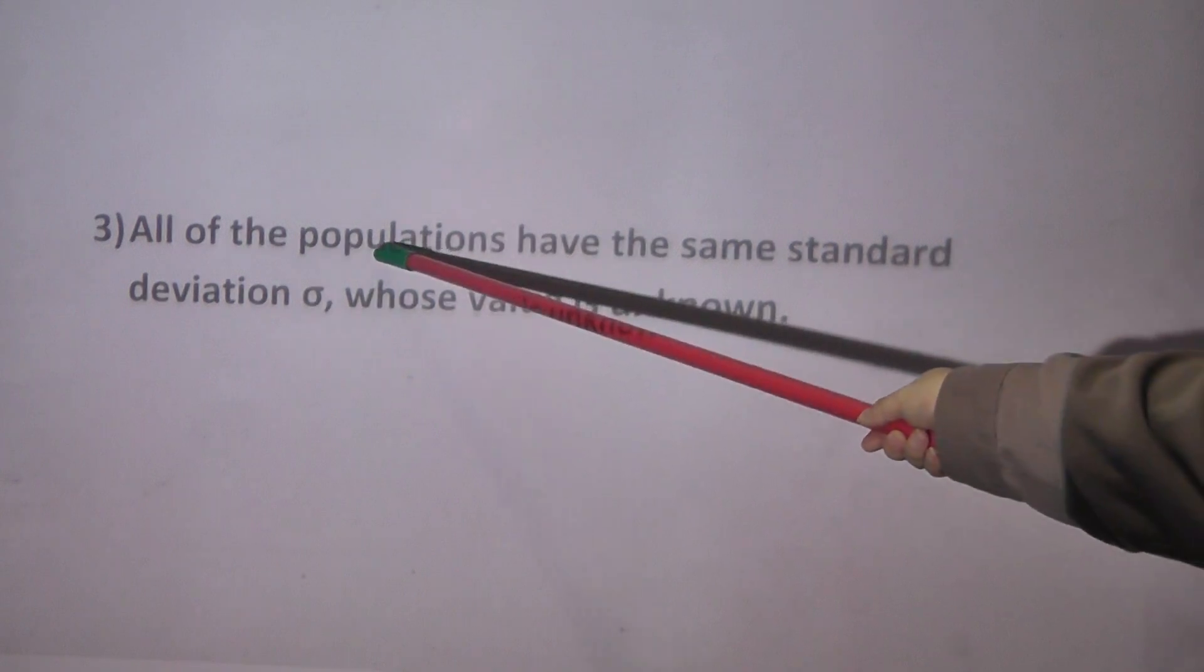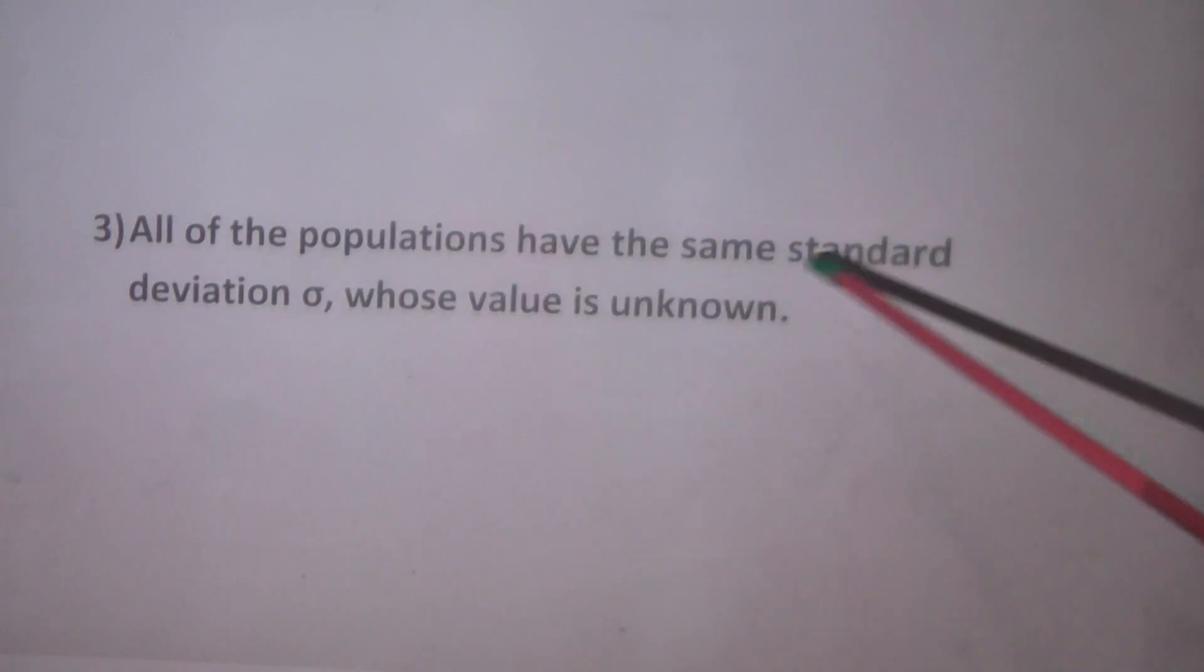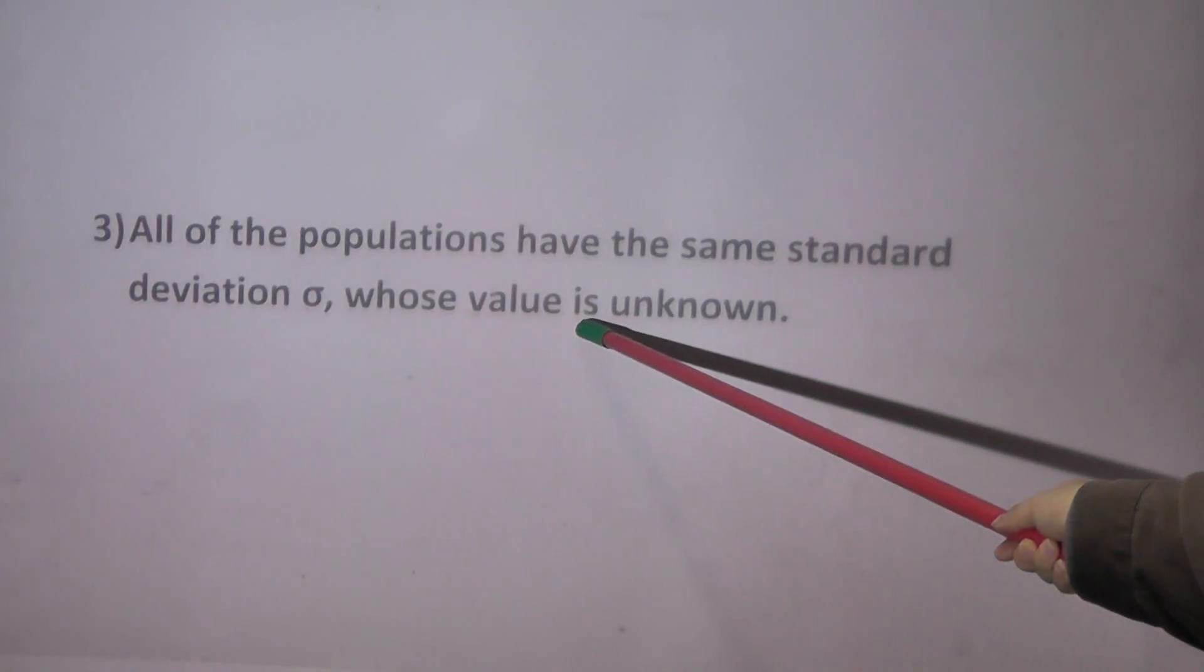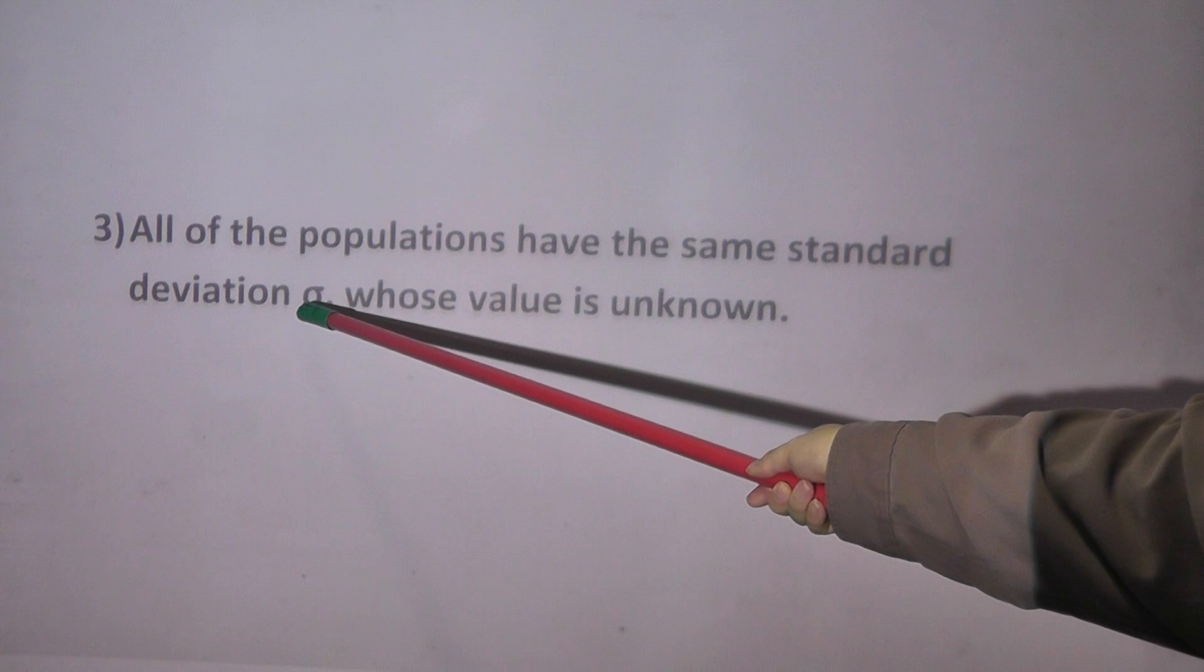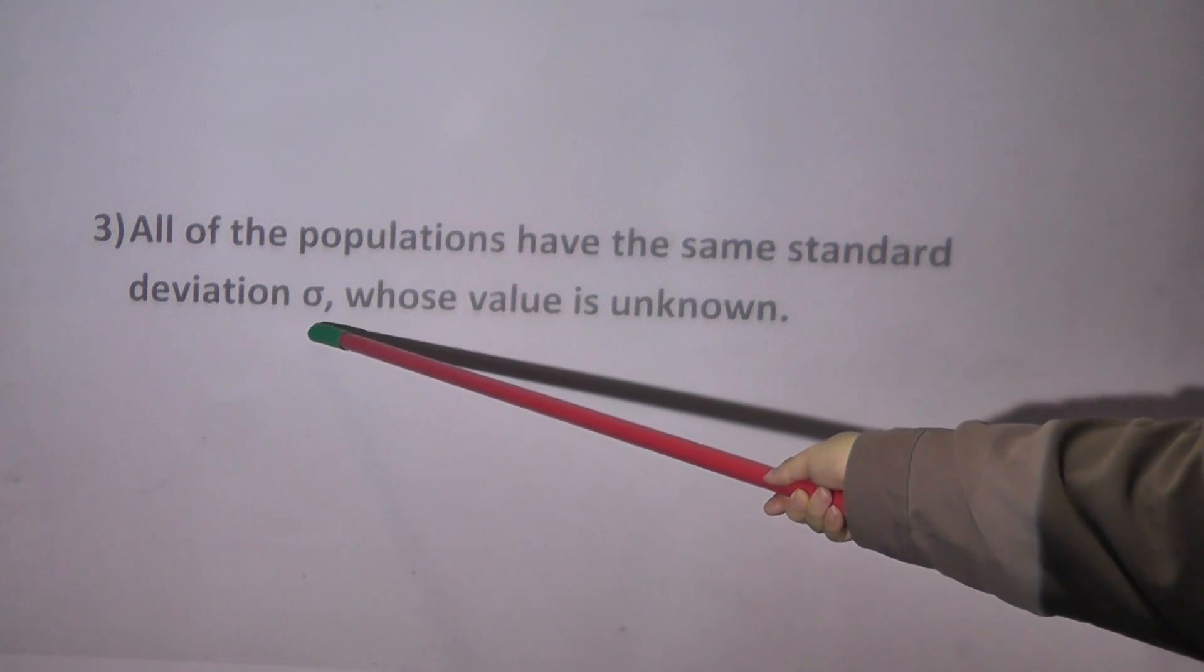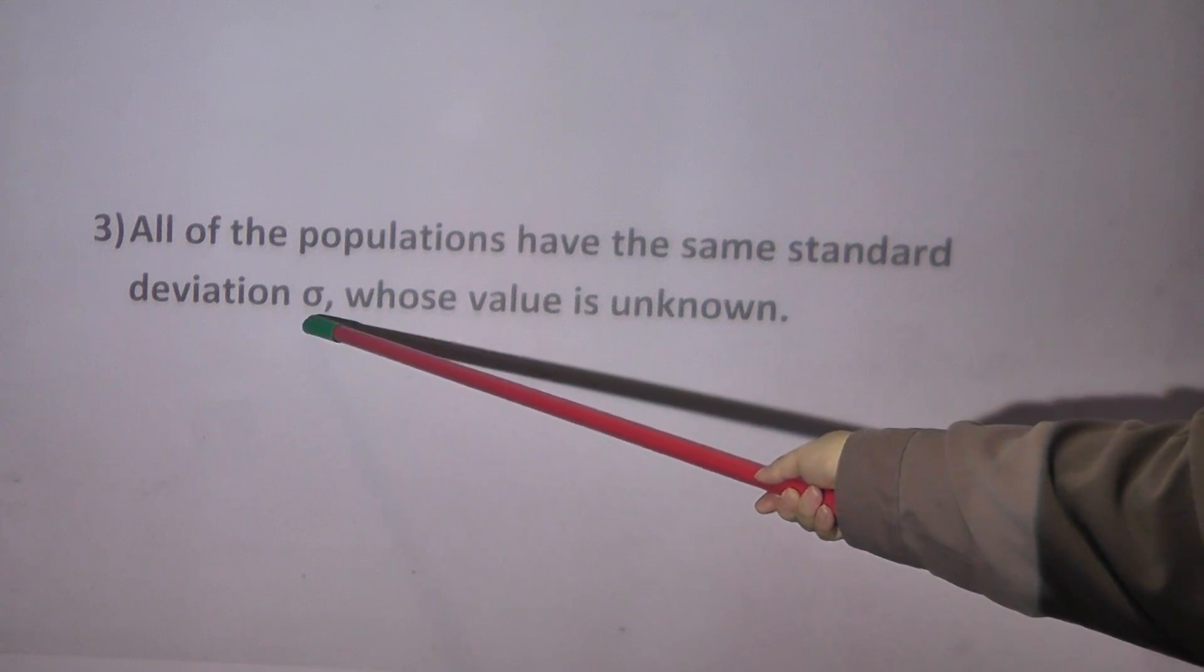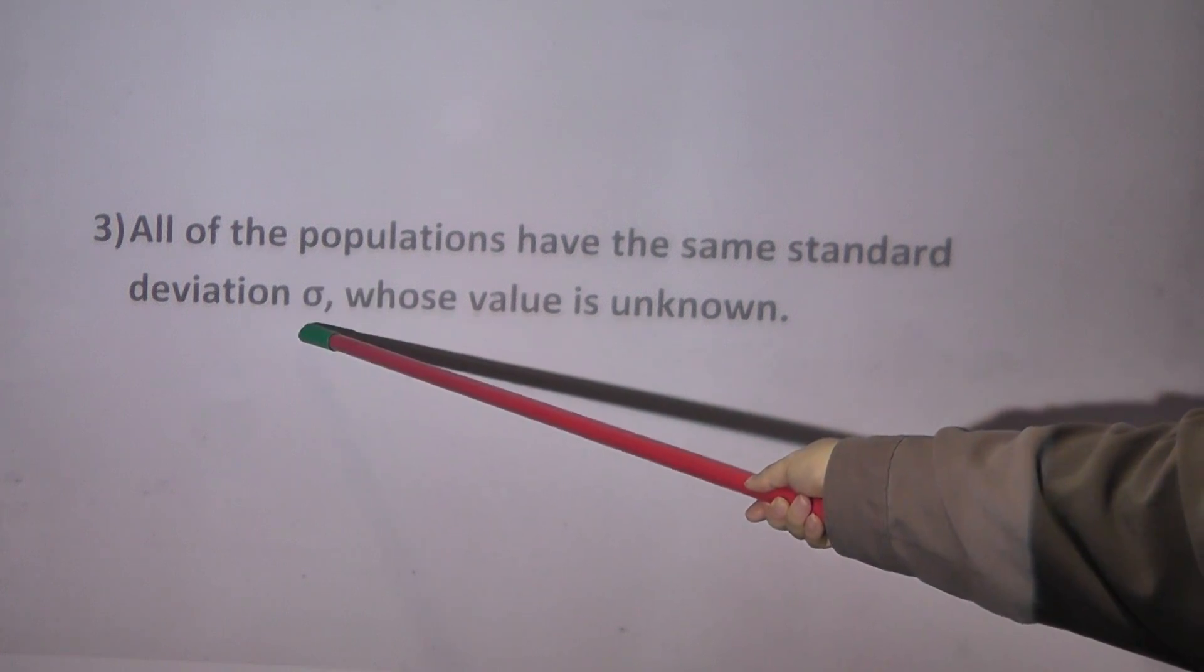And condition three, or assumption three. All the populations have the same standard deviation sigma, whose value is unknown. This assumption is also very important. Although three samples from three populations, they have unknown mu_1, mu_2, mu_3, however, we assume the variance for three populations are the same. They are all equal to sigma squared, or you say standard deviation equal to sigma. They have unknown common standard deviation.